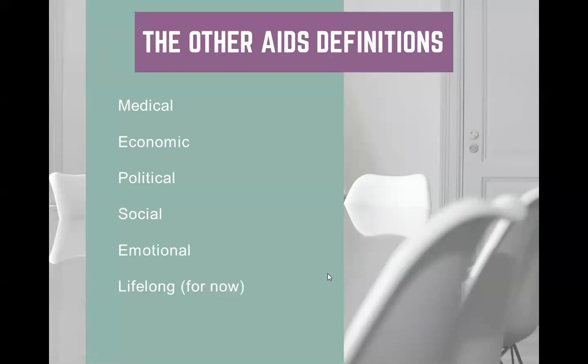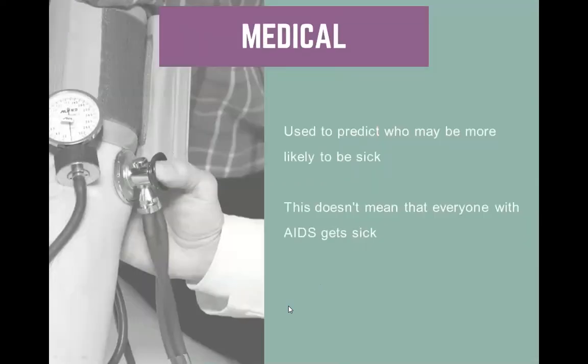I want to talk a little more about how HIV and AIDS are more than just a medical condition. There are lots of intersecting factors that make HIV many different things in different arenas — it is economic, political, social, and emotional. Right now, having an AIDS diagnosis is for life. The medical purpose of an AIDS diagnosis is used to help predict if folks are likely to get sick, because having 200 or fewer CD4 cells isn't enough to consistently stay healthy and avoid opportunistic infections. But that doesn't mean everyone with an AIDS diagnosis will get sick — it just means they're more likely to over time.